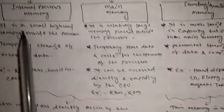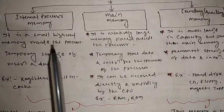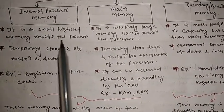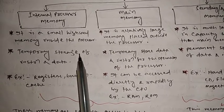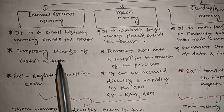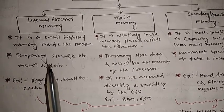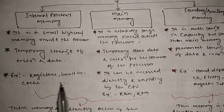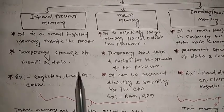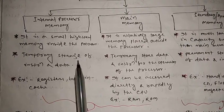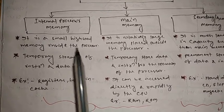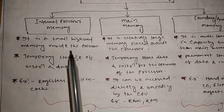What do we mean by internal processor memory? The memory which is present inside the processor is called internal processor memory. It is a small, high-speed memory inside the processor used for temporary storage of instructions and data. Examples of internal processor memory are registers and built-in cache. It is high speed in nature, size is very small, and because it is inside the processor, the execution speed is high and accessing time is faster than other memory.